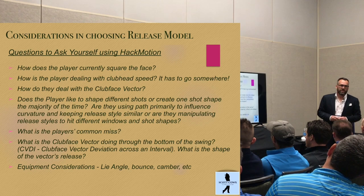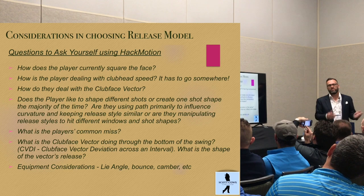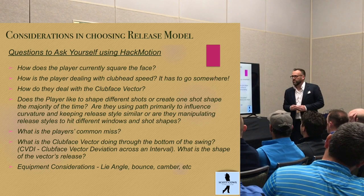How is the player dealing with clubhead speed? As Brian alluded to, it has to go somewhere. I either have to rotate my body really quickly, or at some point that clubhead is going to move faster than the wrist segment, which is going to move faster than the arm segment, which is going to move faster than my body segments. So it has to go somewhere.